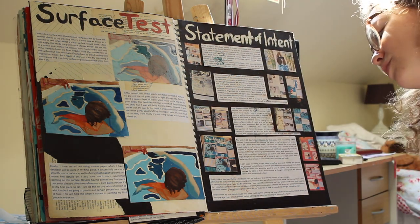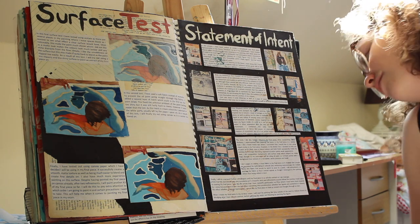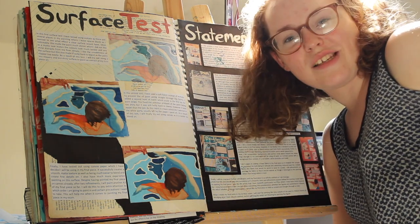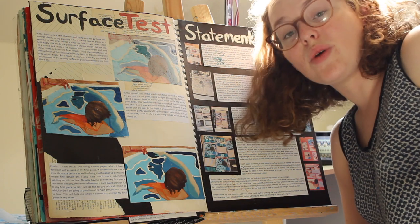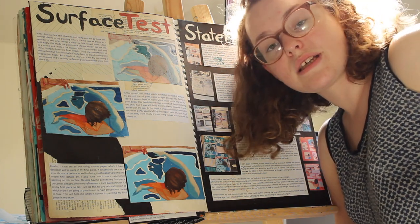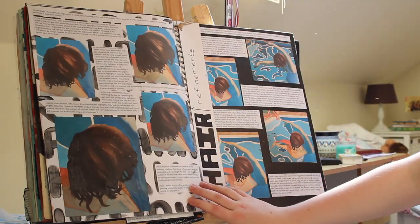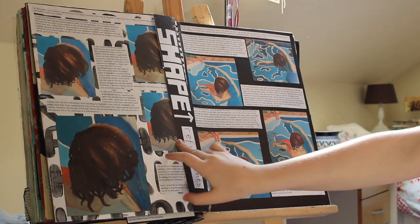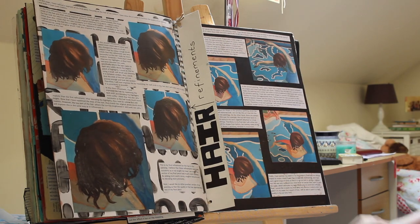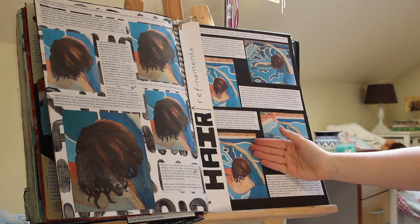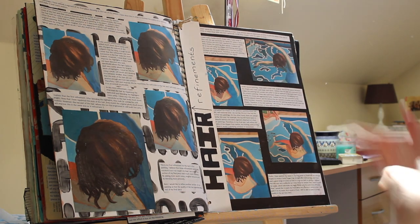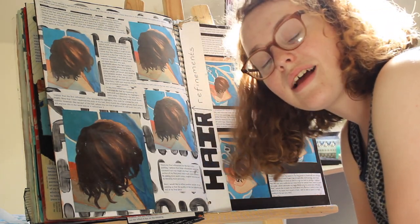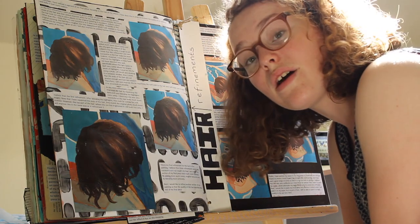I've said at the bottom: when I create my final piece in my 10-hour exam I'll start by painting the area outside the pool to reduce the chance of smudging. Essentially it's like a risk assessment for doing your final piece — make sure you can do it in the time you have, which is five hours one day and five hours the second day. Next I've done a hair refinement, and here I've done shape refinements — refining the shape of the pool. This was a bad page because it actually made my painting worse, but I fixed it later on. These refinements show you can improve your piece and create something of good quality.